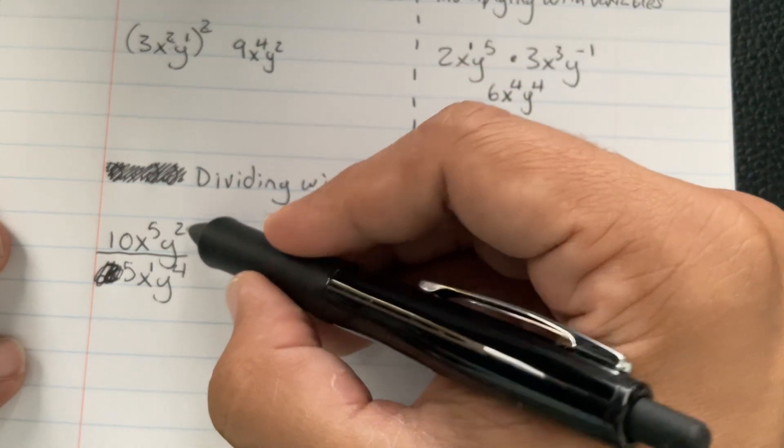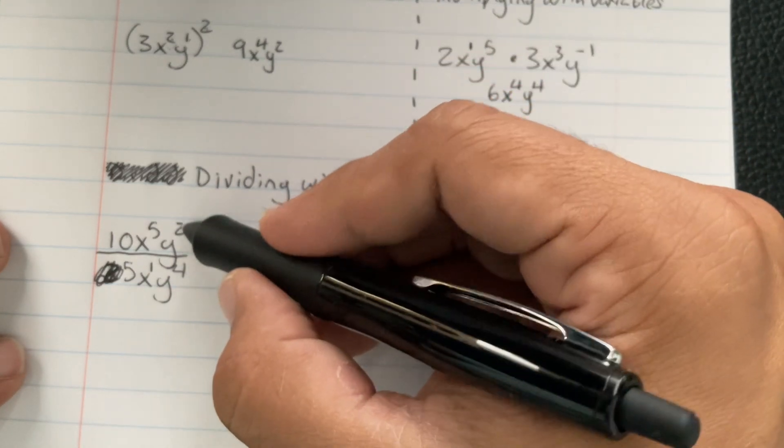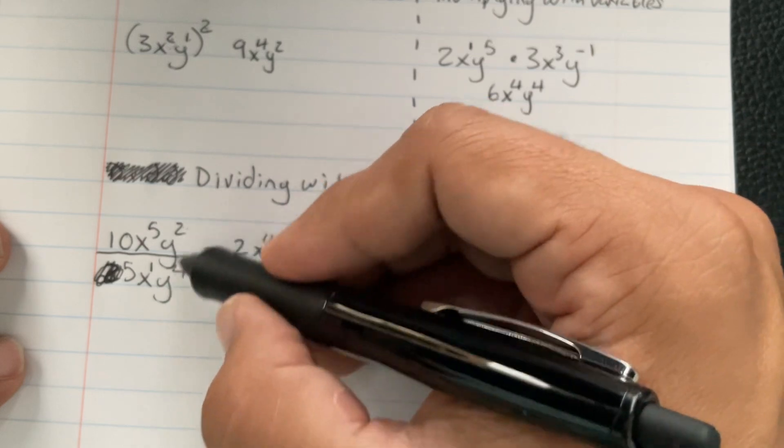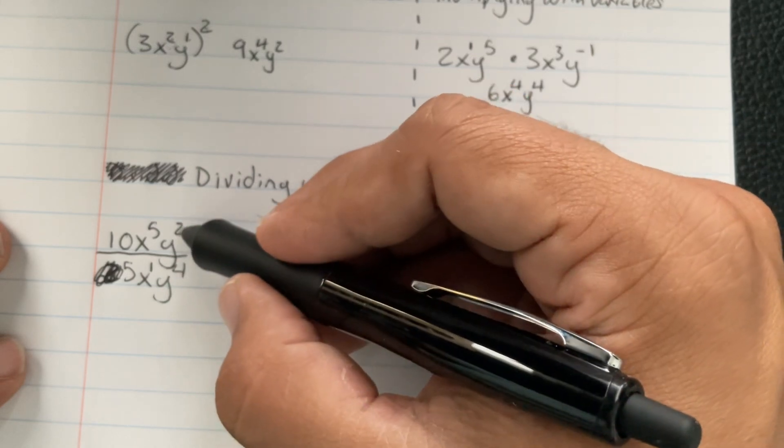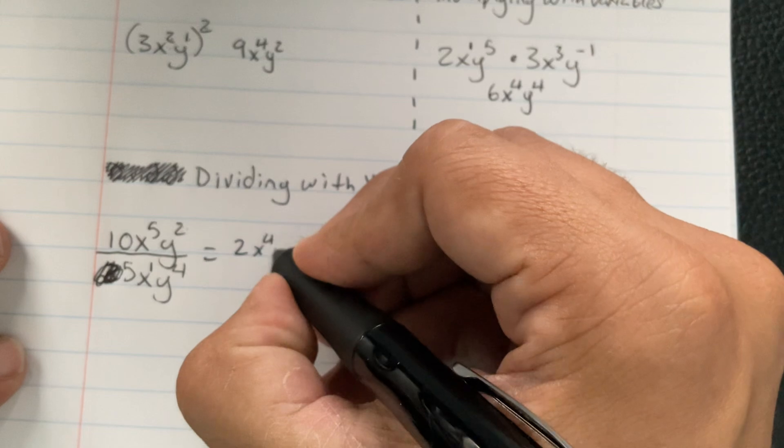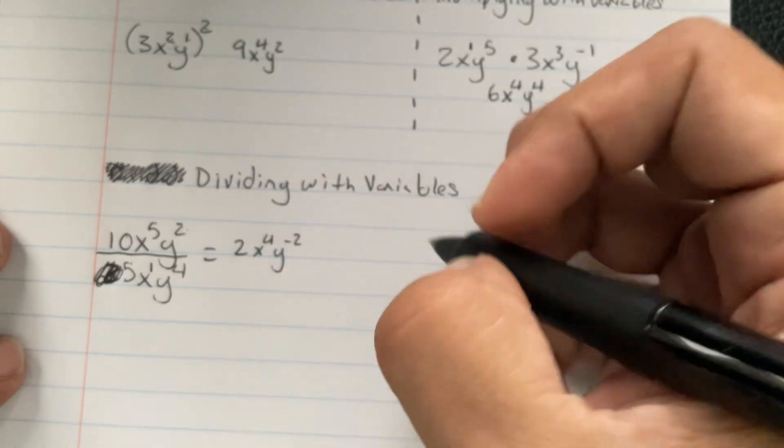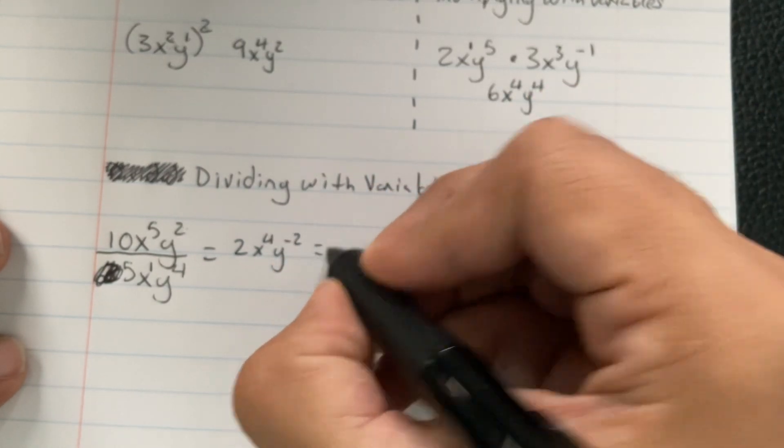And then this one's going to be 2 and 4. So that's going to be 2 minus 4, because when you divide, the exponents subtract. So that's going to be 2 minus 4, and it's going to leave us with a negative 2 there. So I'll fix that.